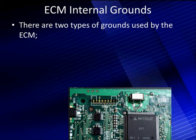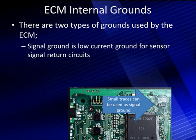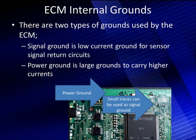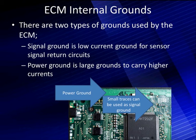Let's go look at what this looks like inside the PCM. There are two types of grounds used by an ECM, PCM, or ECU. First, we have signal grounds — low current grounds for sensor signal returns. Look how small that trace is on the printed circuit board. That's a ground for signal return going out to all the different sensors. On the outside of the printed circuit board, we have power grounds — big, wide traces — large grounds to carry higher currents for injector controls, solenoid controls, and coil-on-plug controls. Just like in wiring, we need big layers of copper on the circuit board to carry high currents.